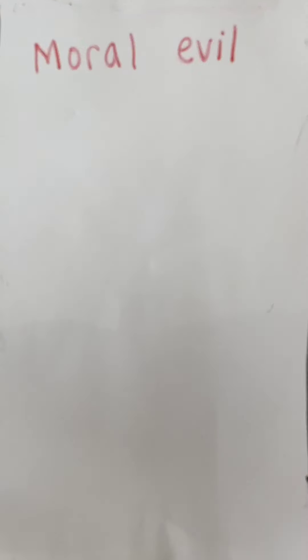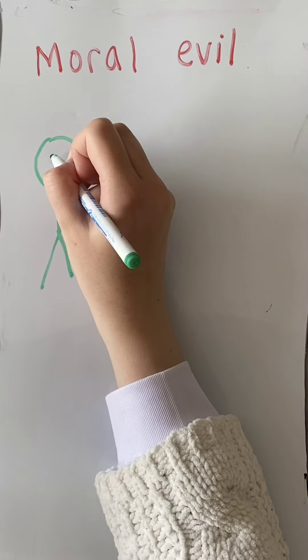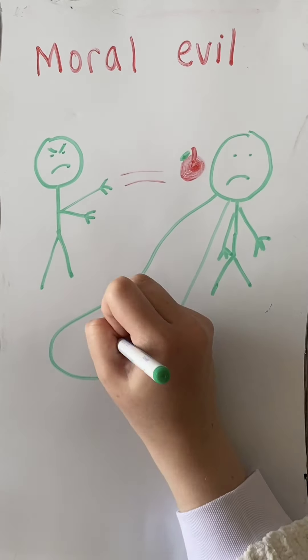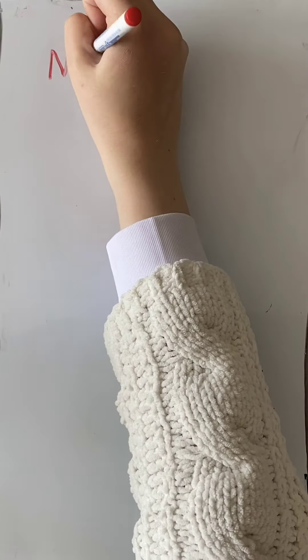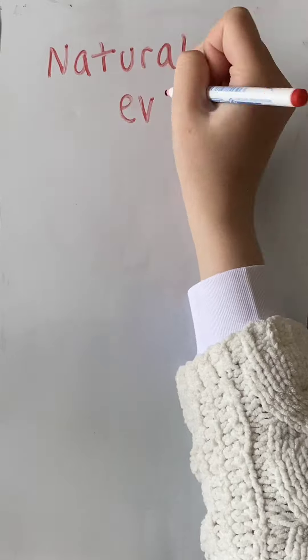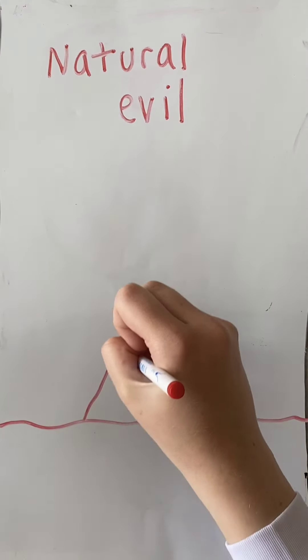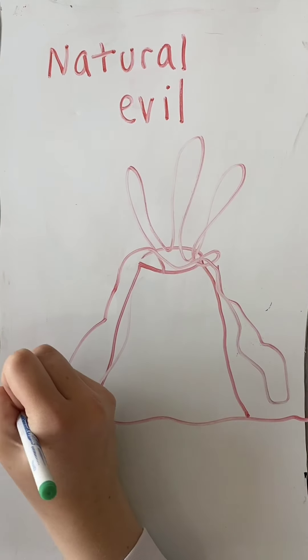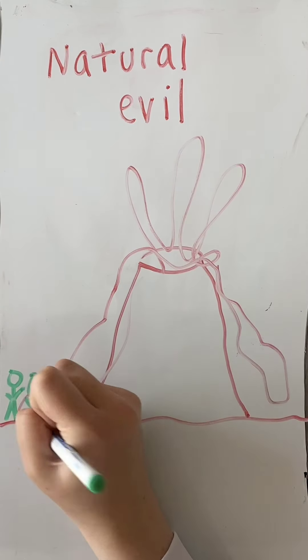Moral evil is the physical pain and mental suffering brought about by the deliberate actions or neglect of human beings. On the other hand, natural evil is pain and suffering that's not brought about by any human beings. This can include biological causes such as disease and physical causes such as earthquakes or volcano eruptions.